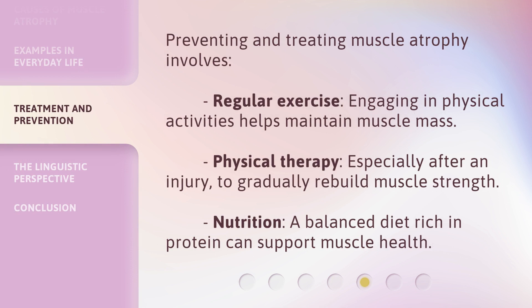Preventing and treating muscle atrophy involves regular exercise — engaging in physical activities helps maintain muscle mass. Physical therapy, especially after an injury, helps to gradually rebuild muscle strength. Nutrition is also important: a balanced diet rich in protein can support muscle health.